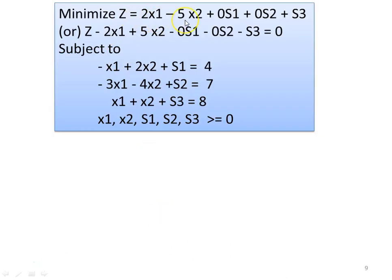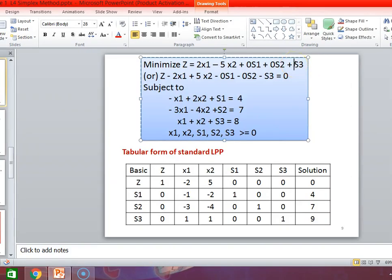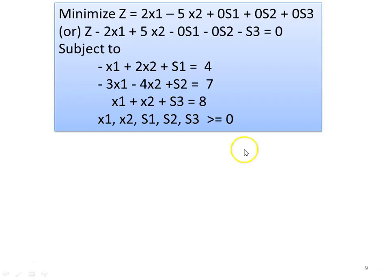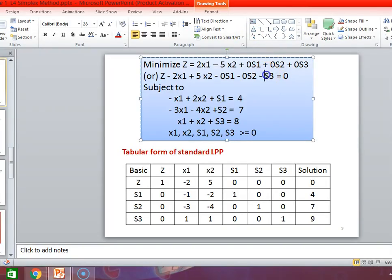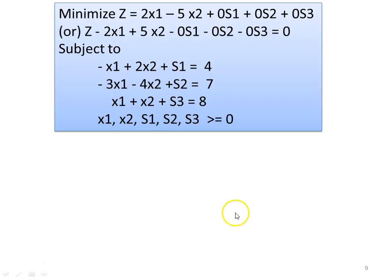Multiplying constraint 1 by minus 1 gives: −x1 − 2x2 ≤ 4. Similarly, constraint 2 becomes: −3x1 − 4x2 ≤ 7. Now we add slack variable s1 to the first constraint, s2 to the second, and s3 to the third, and write the standard form. Minimize z = 2x1 − x2 + 0·s1 + 0·s2 + 0·s3. Bringing everything to the left: z − 2x1 + x2 − 0·s1 − 0·s2 − 0·s3 = 0, subject to: −x1 − 2x2 + s1 = 4, −3x1 − 4x2 + s2 = 7, x1 + x2 + s3 = 8, with x1, x2, s1, s2, s3 ≥ 0.